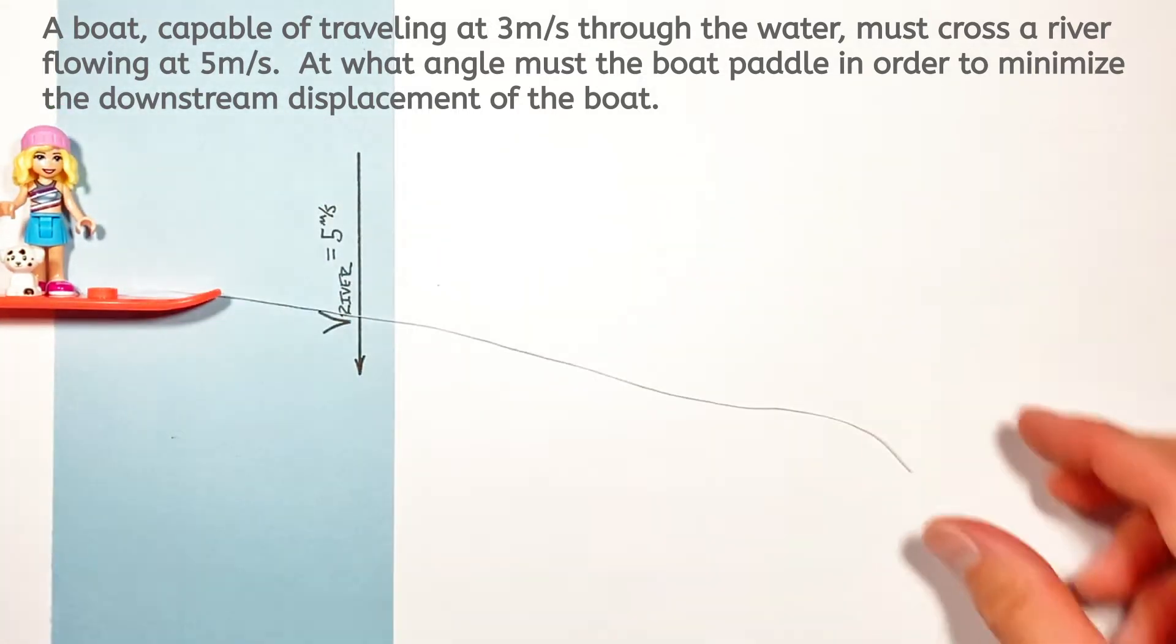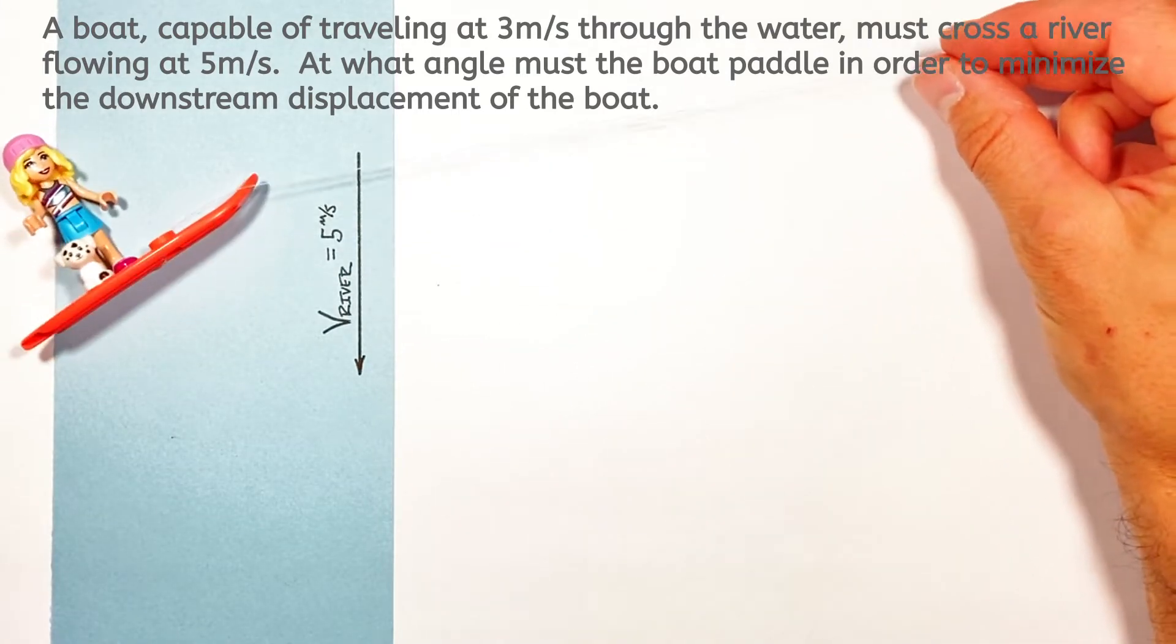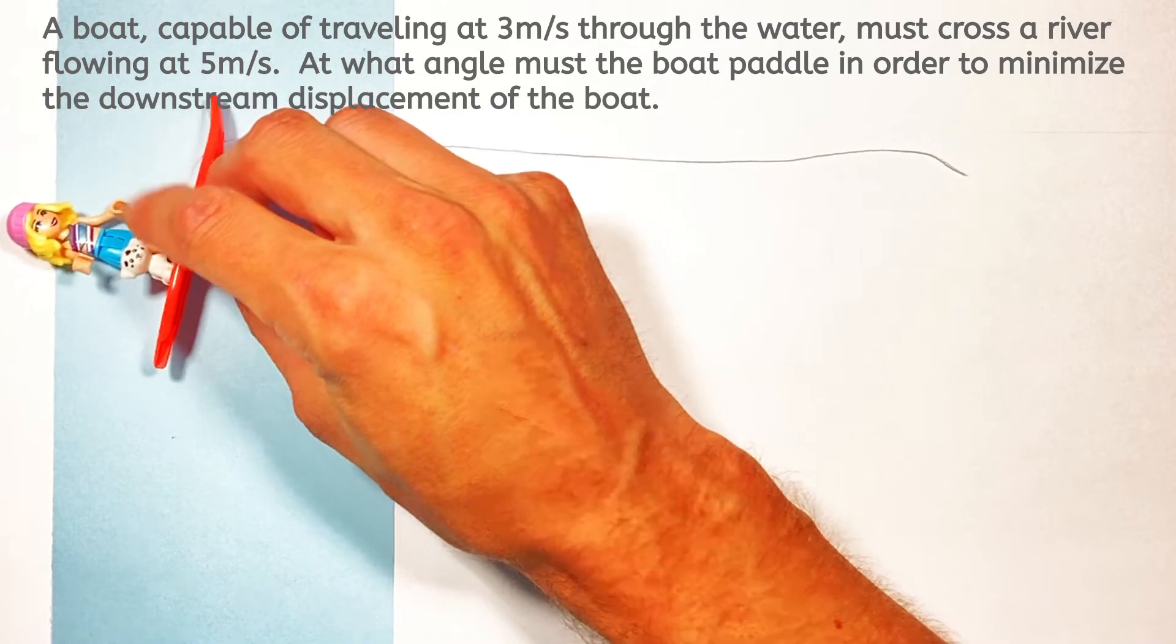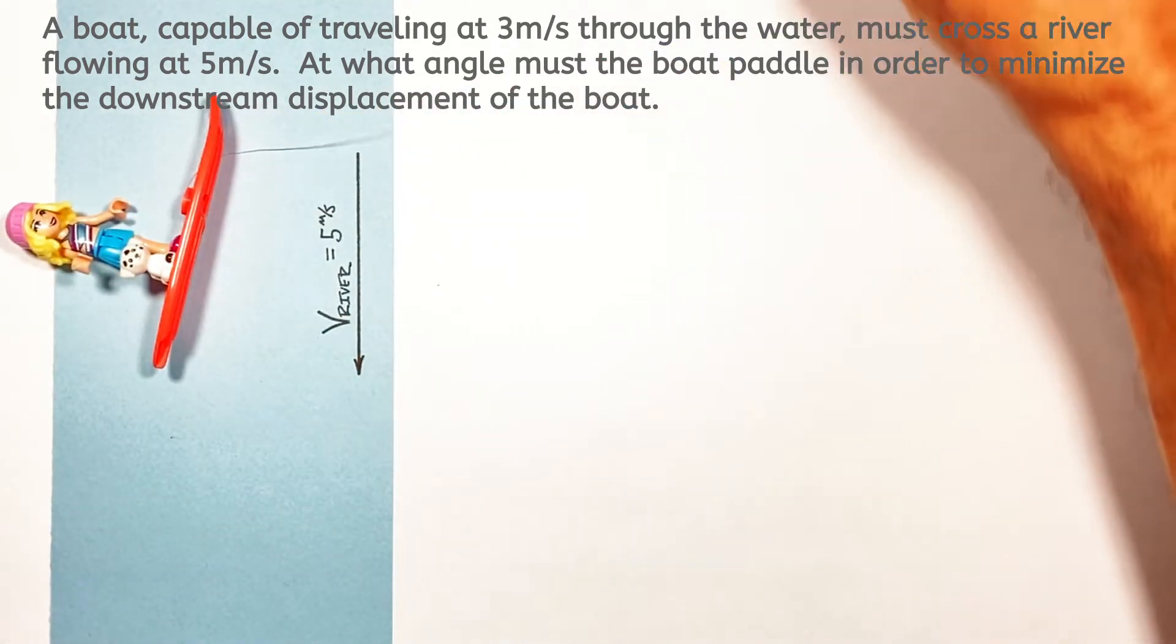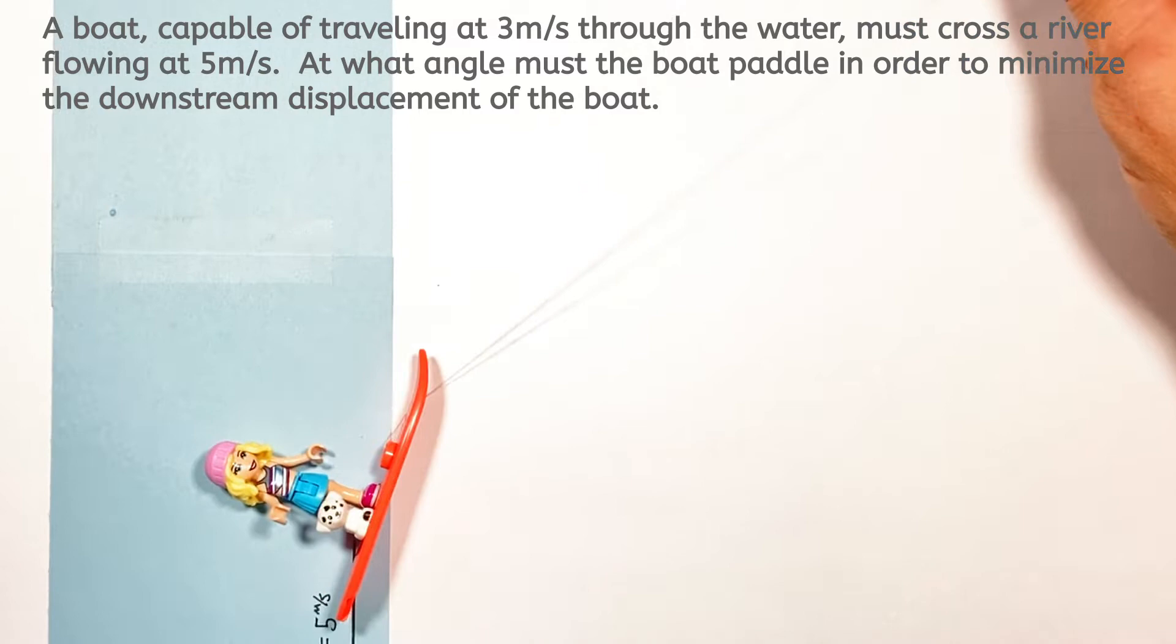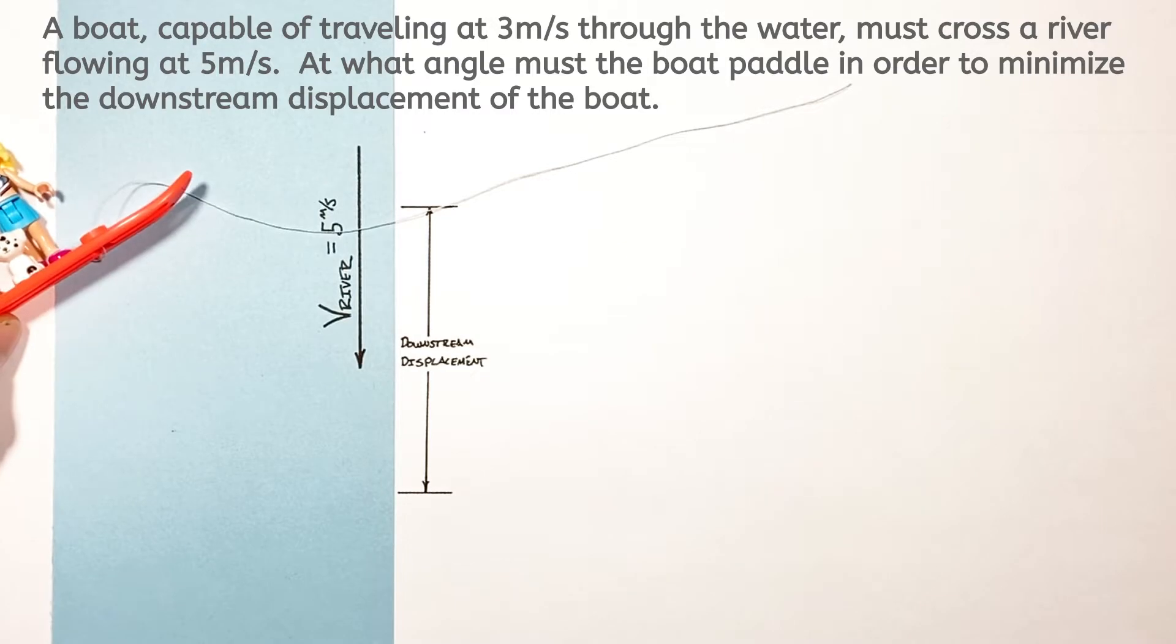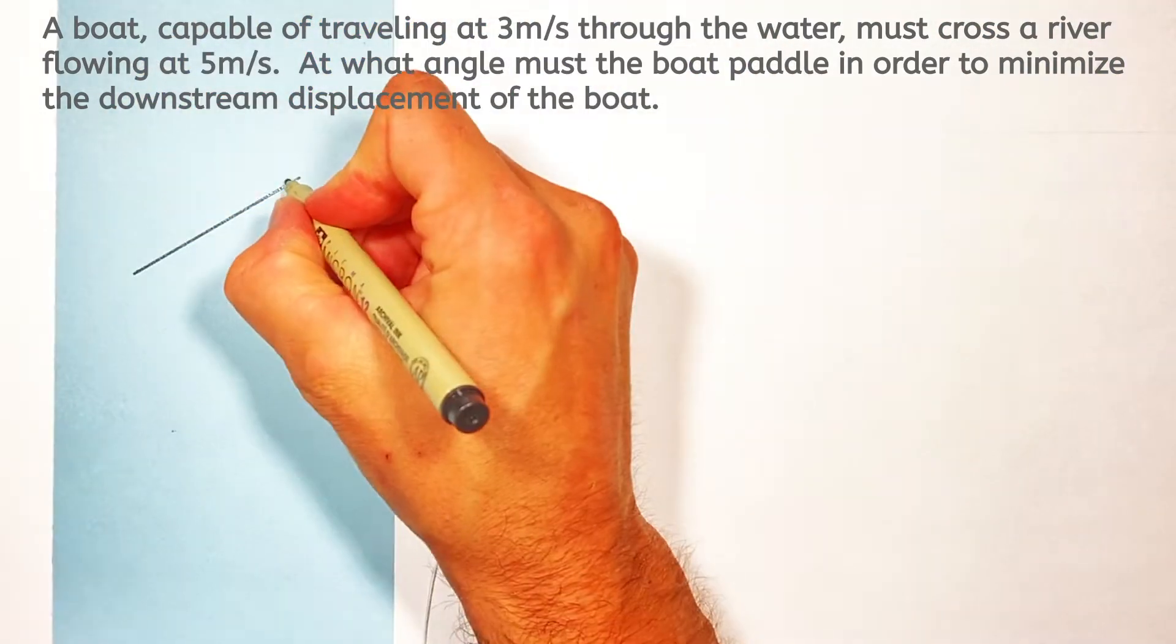And what that means is that there's no way for the boat to go straight across the river. No matter how much it points itself upstream, it's going to be swept downstream inevitably. So in this problem we're going to solve for the angle which the boat has to point upstream in order to minimize the distance which is swept downstream.